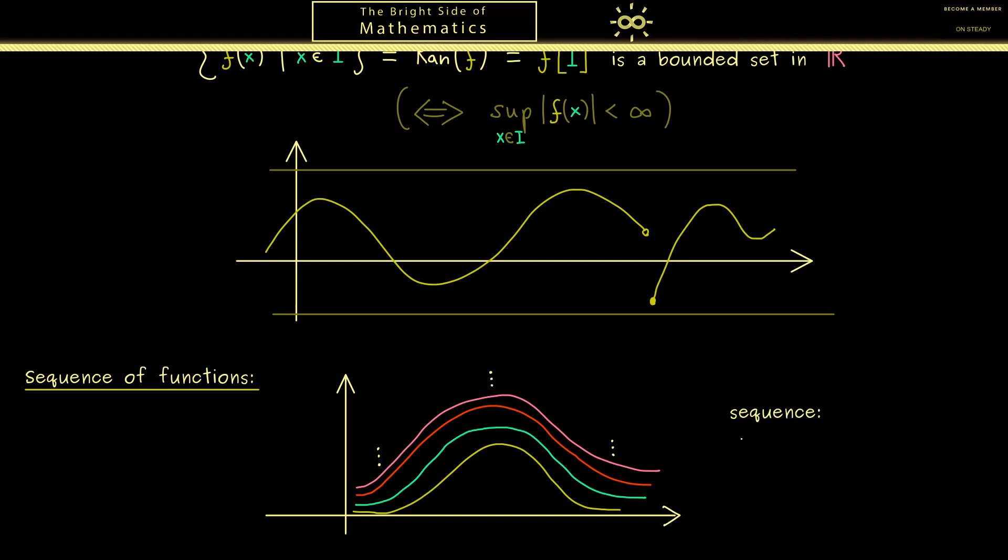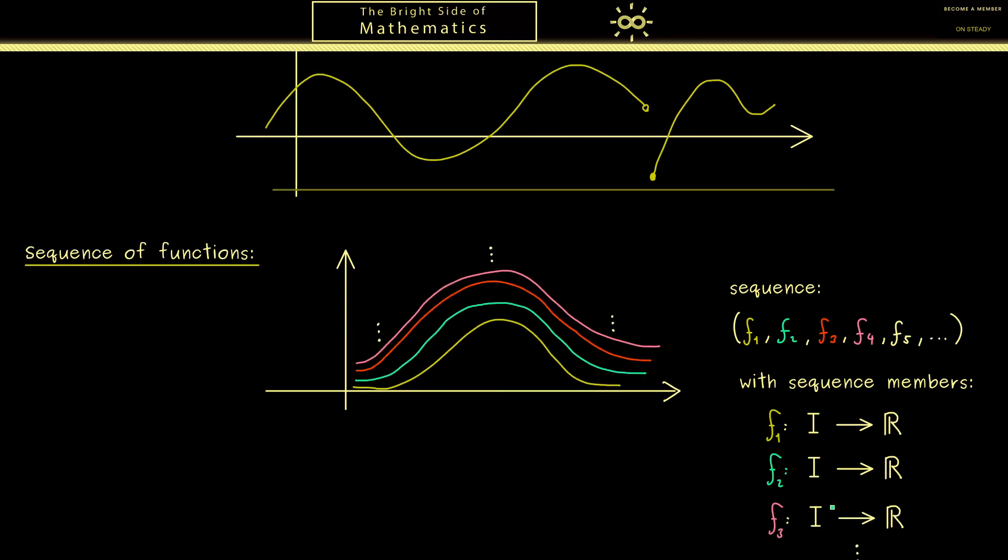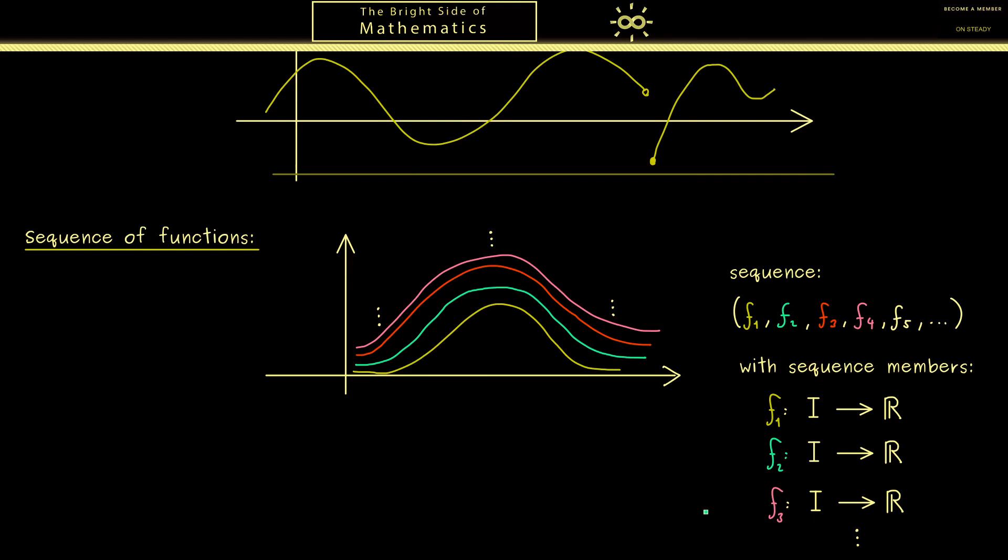So formally, we just have a sequence where the index starts with 1 and goes to infinity. However, now the sequence members themselves are not just real numbers but functions. The only restriction we usually have here is that all the functions involved have the same domain. Hence the subset I here is the same for all functions f_n. So you see, this is really not such a complicated concept.